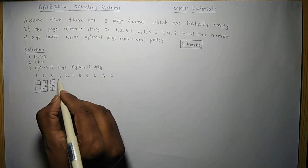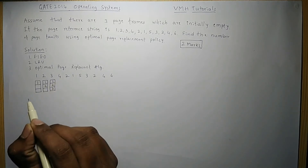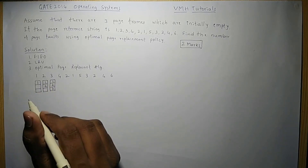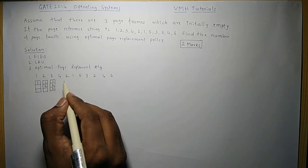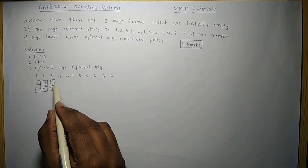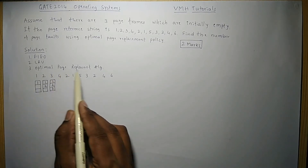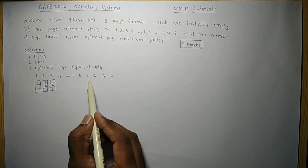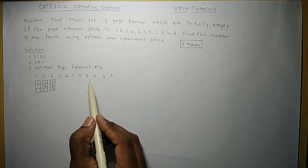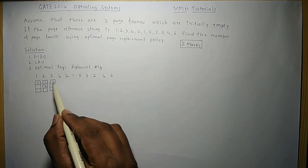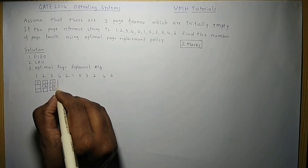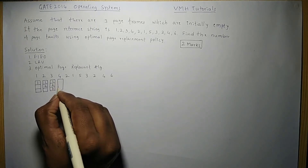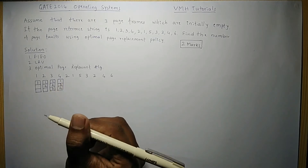Up to here there is no issue. When page 4 is referenced next, it is not available and there is no free space, so we must apply the replacement algorithm. In optimal page replacement, we look at future references: pages 2 and 1 will be used soon, and then page 3. So we replace page 3 with page 4. Pages 1 and 2 remain in memory.